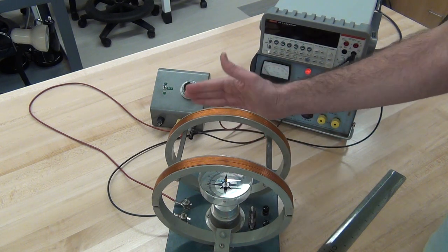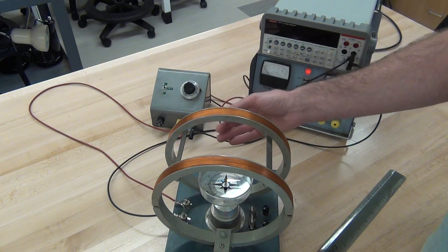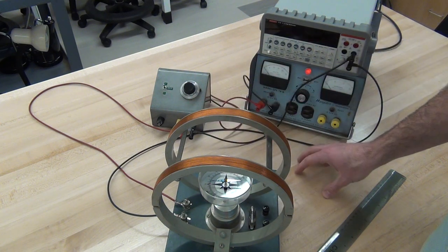Knowing the strength of our deflecting field and the angle that it gives us as a result allows us to calculate the local horizontal field strength.